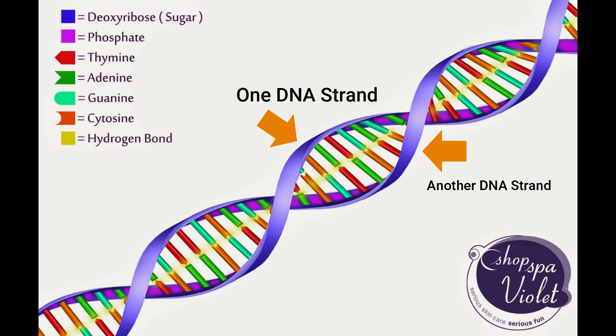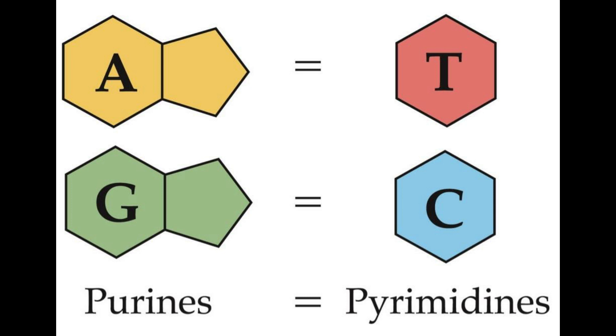Cytosine can only pair with guanine. The reason for this is that a purine must pair with a pyrimidine. This is because a purine and a pyrimidine make a three ring gap between the strands. If there were two purines attached, this would make a four ring gap.